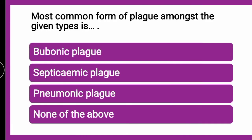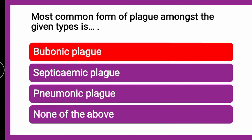The next question is: the most common form of plague amongst the given types is — whether it is bubonic plague, septicemic plague, pneumonic plague, or none of the above. The correct answer is bubonic plague.